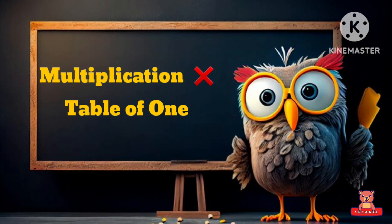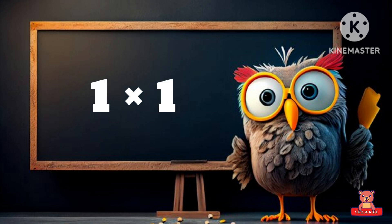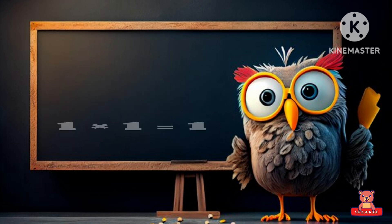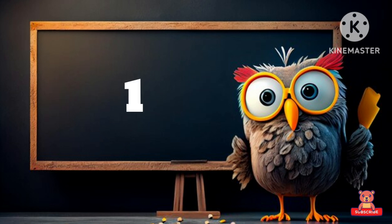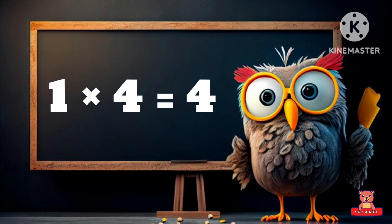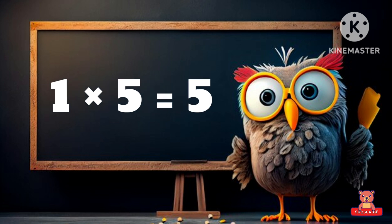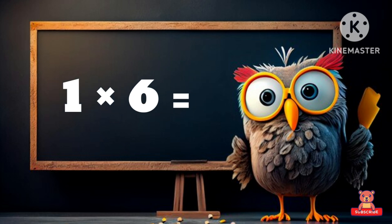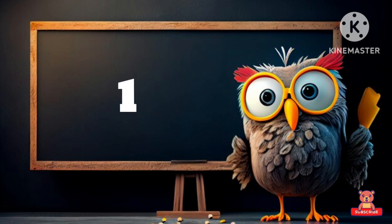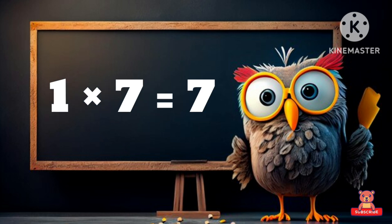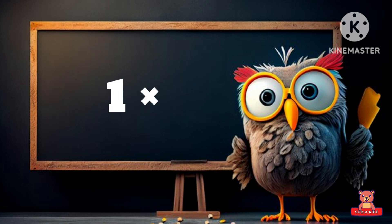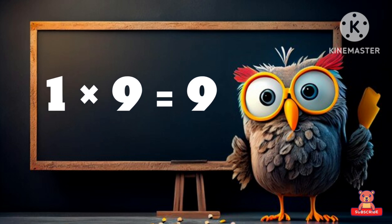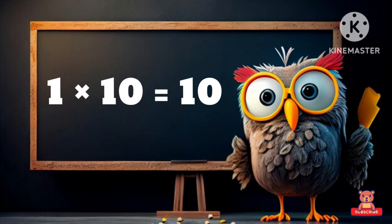Multiplication table of one. One one's a one, one two's a two, one three's a three, one four's a four, one five's a five.